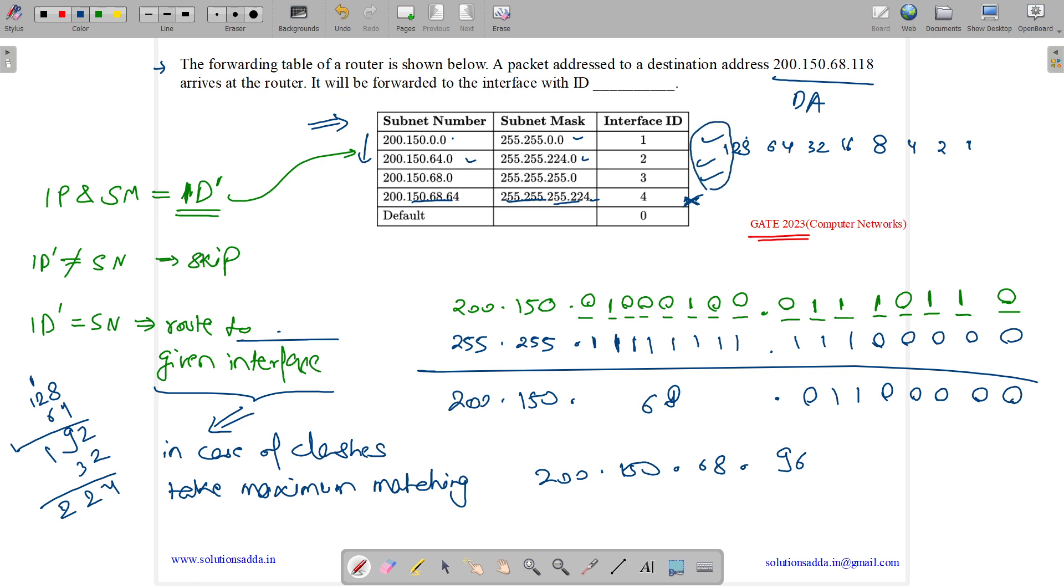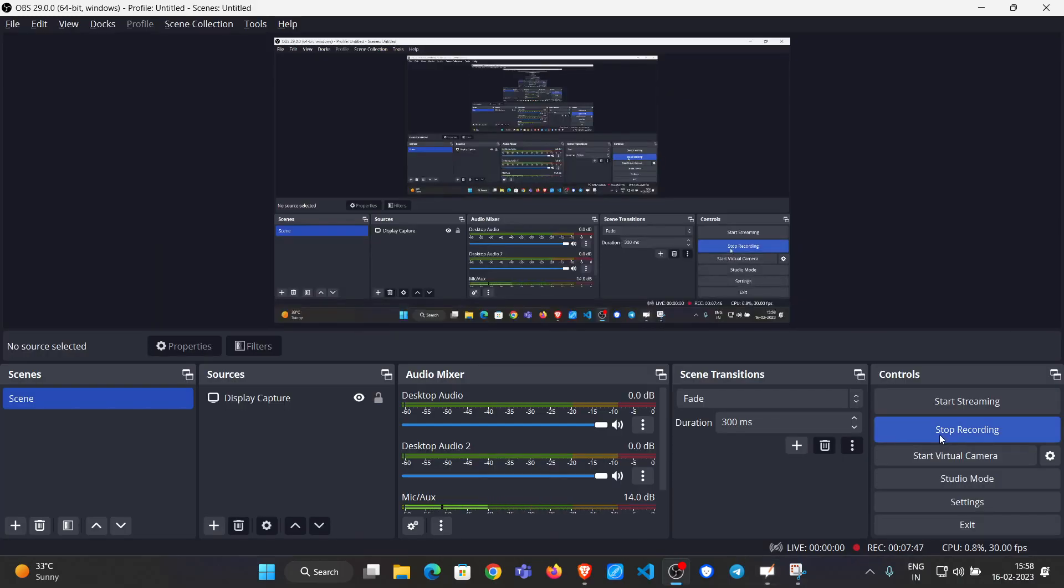So here we have three conflicts. We have three matches. Which one we will take? We will take the maximum matching, which means the one in which the subnet mask is having more number of ones. So we will take the third one and send it to interface 3. So answer is interface with ID 3.